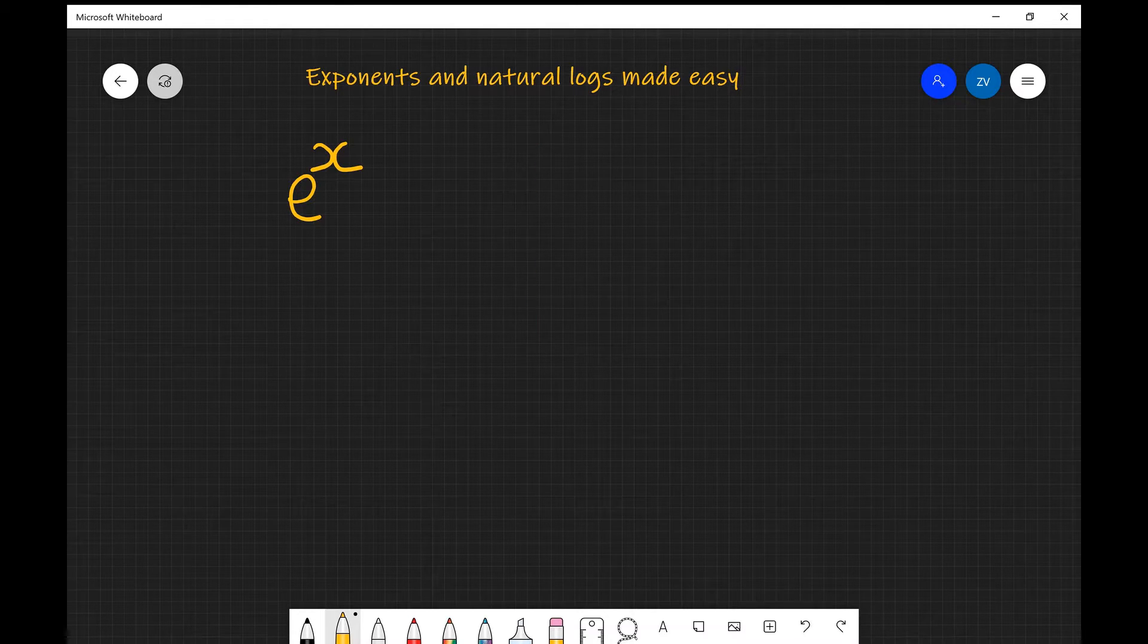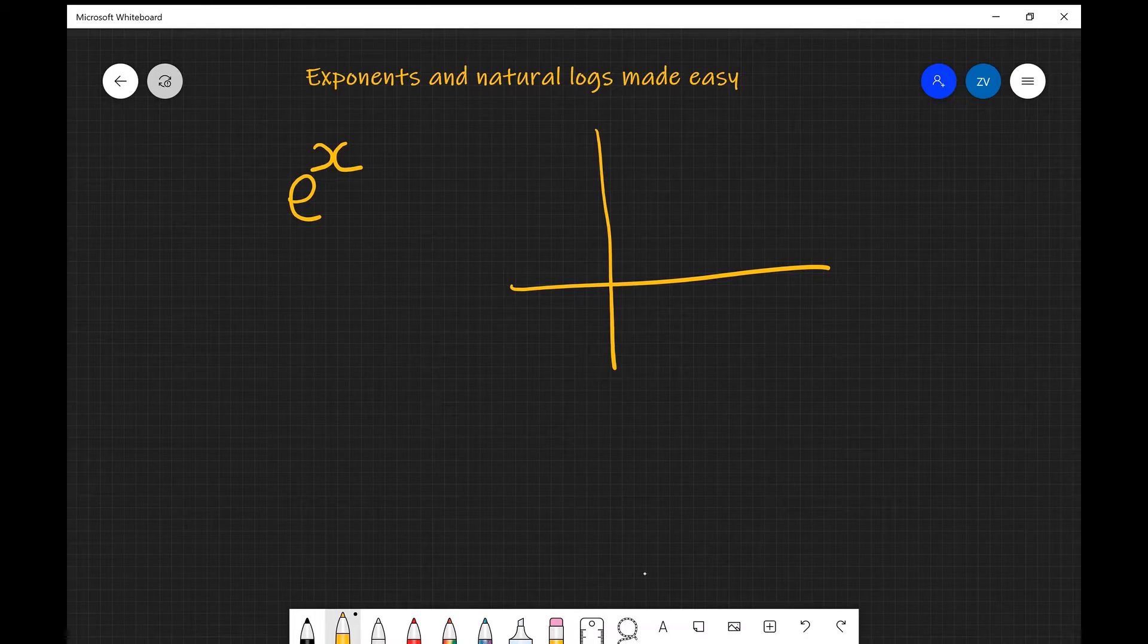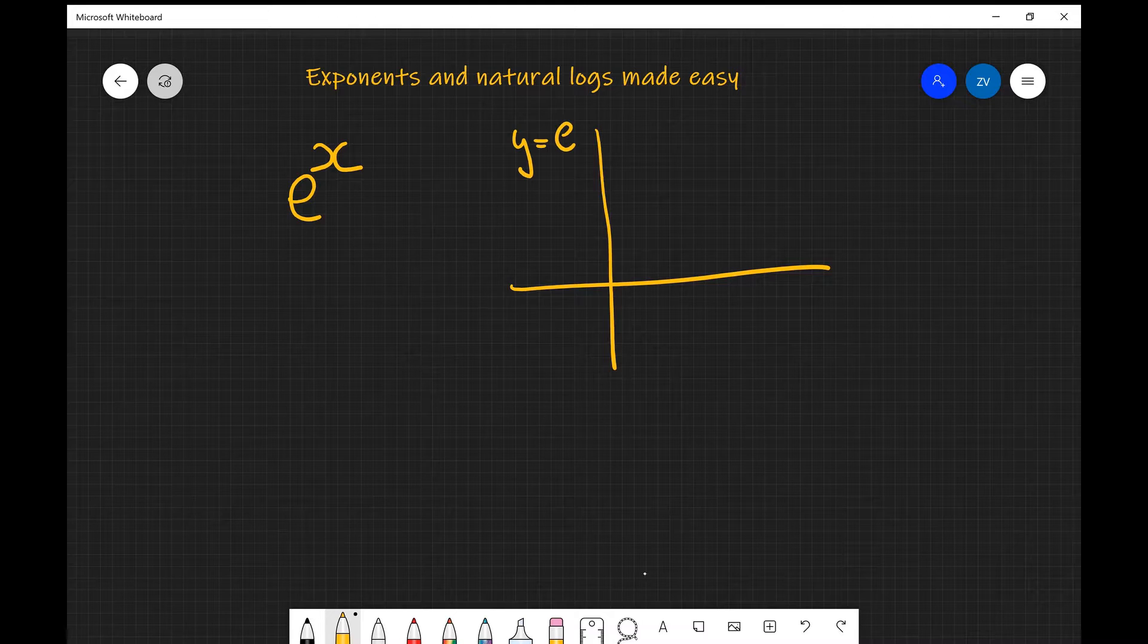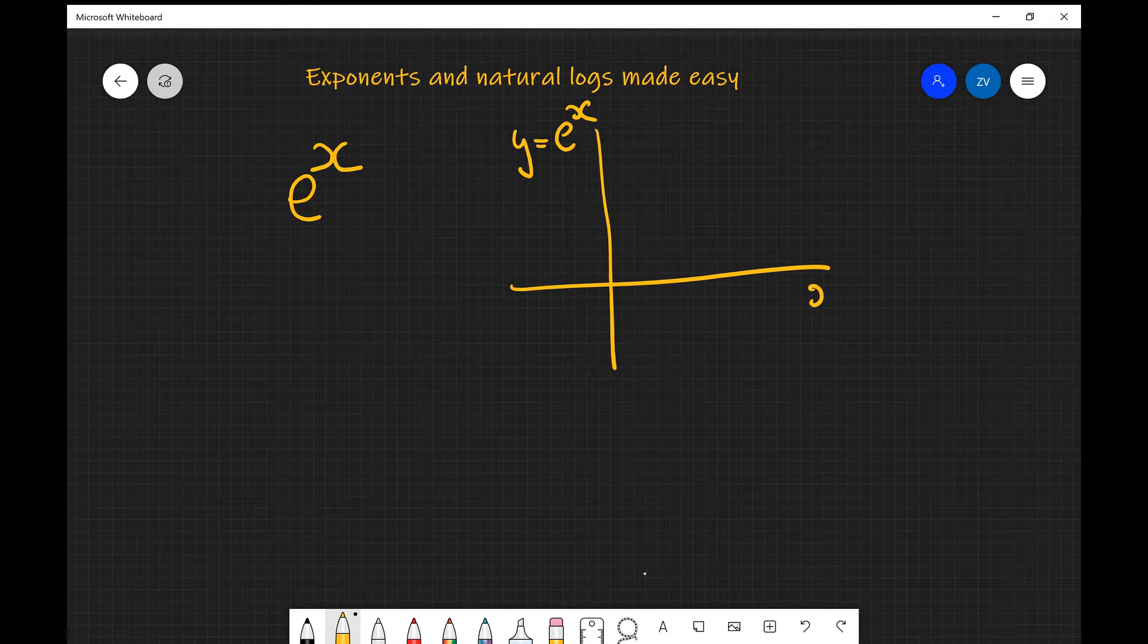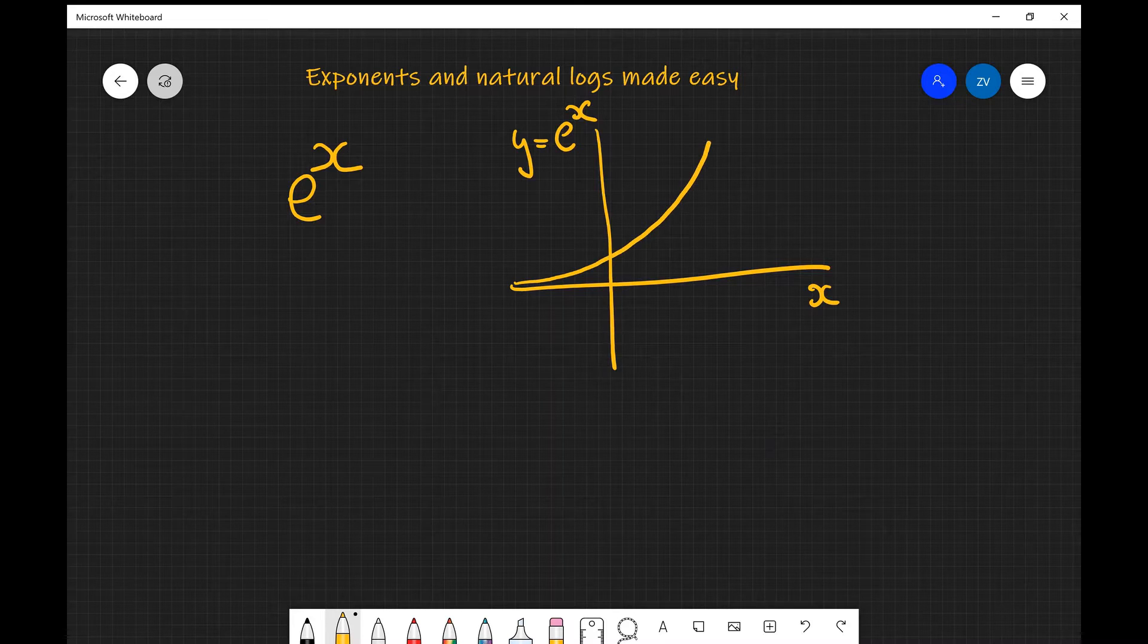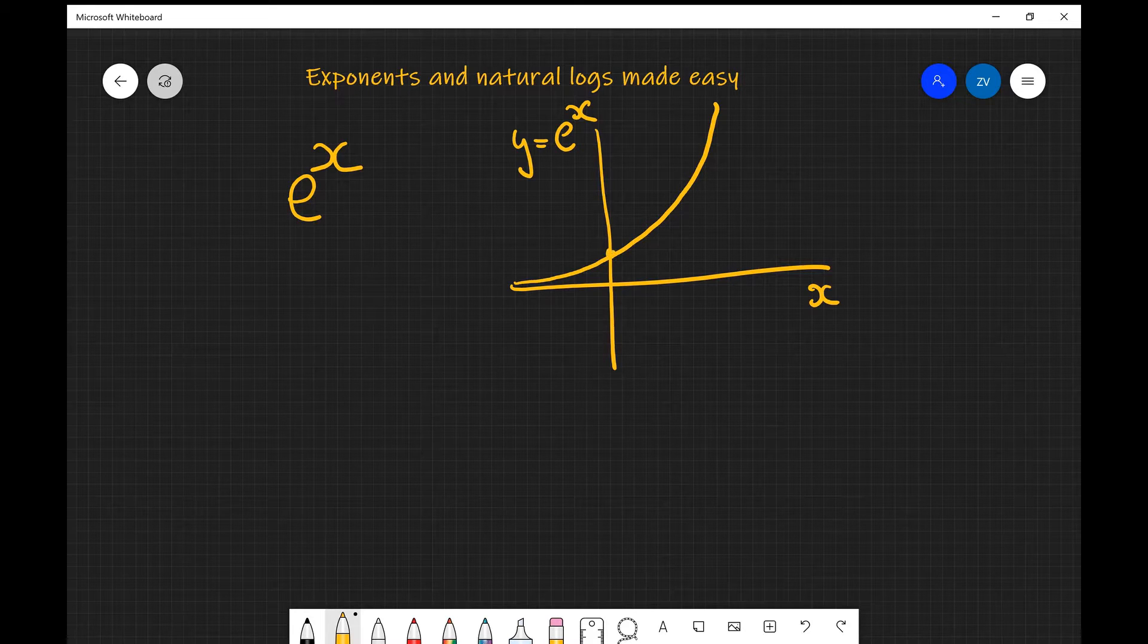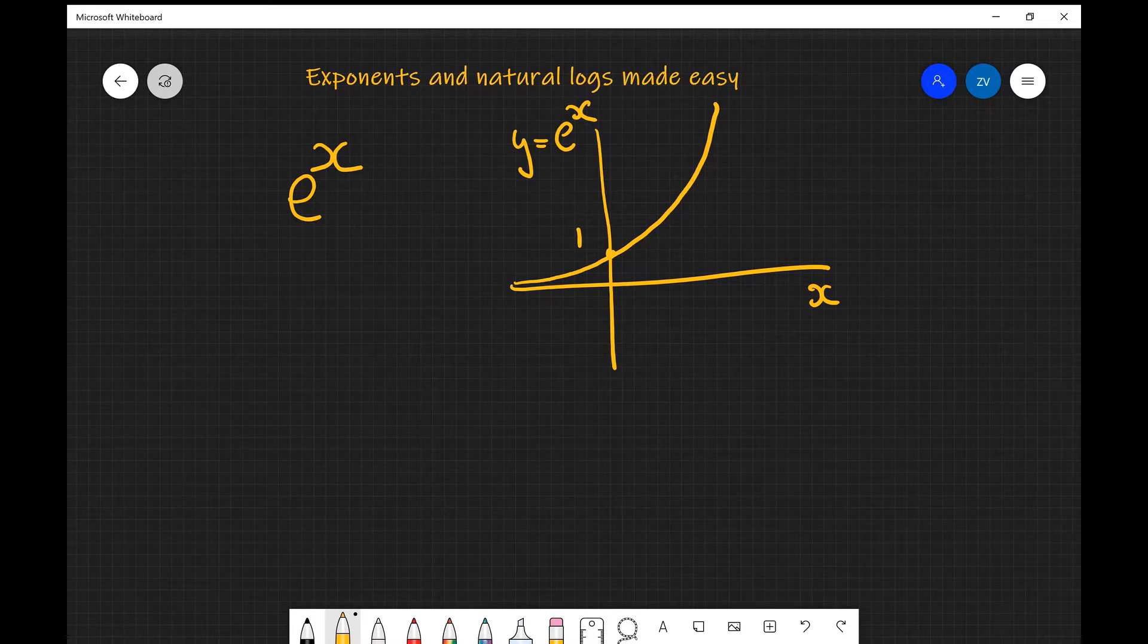The function, if we were to plot let's say y is equal to e to the x, notice that when x is equal to 0 this function is going to equal 1 and then it will rise really quickly.